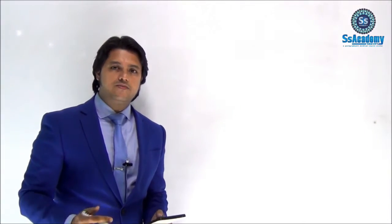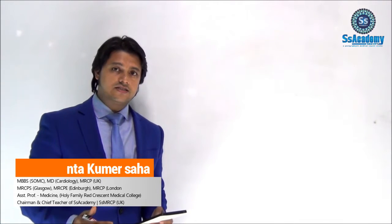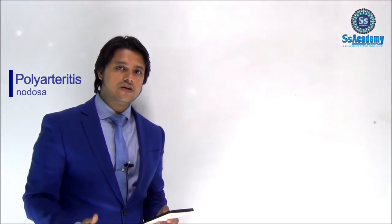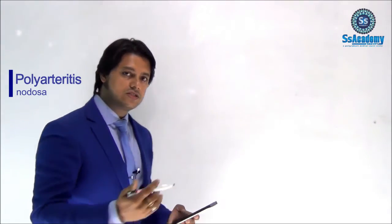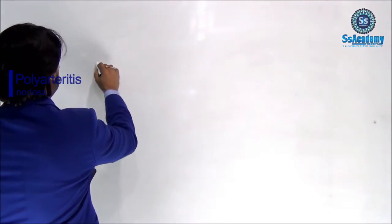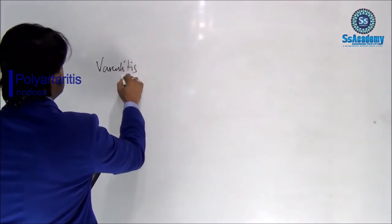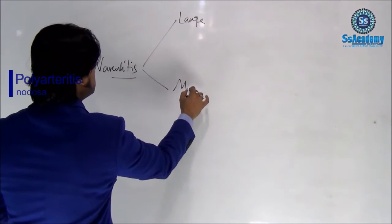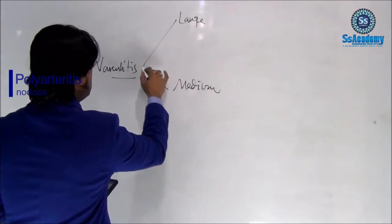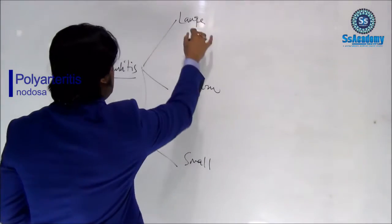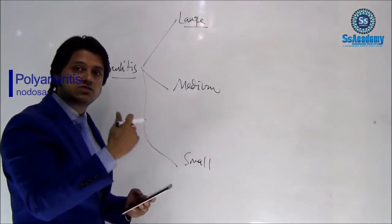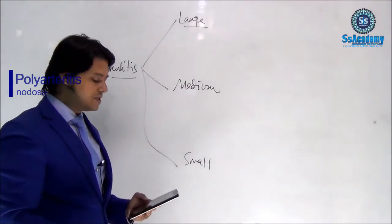Before going to polyarteritis nodosa, because it's a vasculitis — a variety of medium vessel vasculitis — we need to discuss the varieties of vasculitis. Vasculitis is the inflammation of the vessels. We have large vessels, medium-sized vessels, and small vessels, giving us three categories: large vessel vasculitis, medium vessel vasculitis, and small vessel vasculitis.